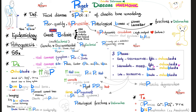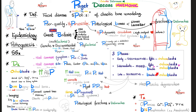In Paget's disease the bone can have an AV fistula: blood shunts directly from artery to vein without reaching the capillary bed, creating a hyperdynamic circulation also known as high output cardiac failure. This bypass also increases the patient's risk of vascular steal syndromes.